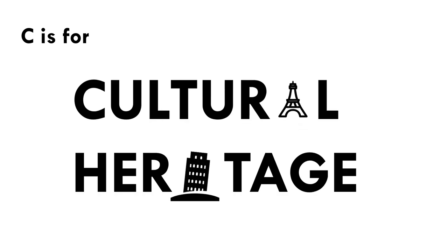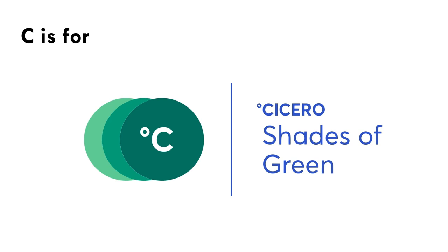C is for cultural heritage — an essential aspect of ESG, as it represents the social and human dimension of sustainability. Respecting and preserving cultural heritage is crucial for maintaining cultural diversity, promoting social cohesion, and fostering sustainable development. C is for Cicero Shades of Green — a rating system developed by CICERO, the Center for International Climate Research, to assess the environmental performance and climate risk management of various financial instruments, helping investors identify and compare green and sustainable investment opportunities.